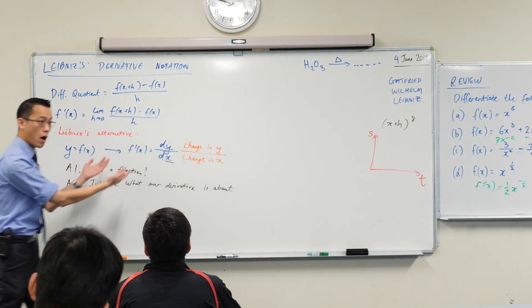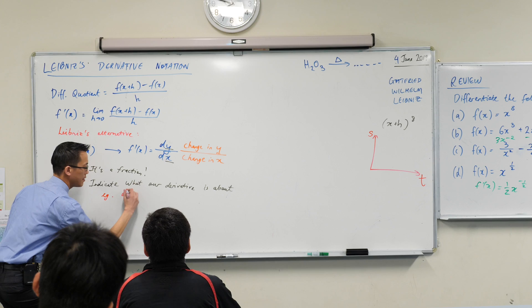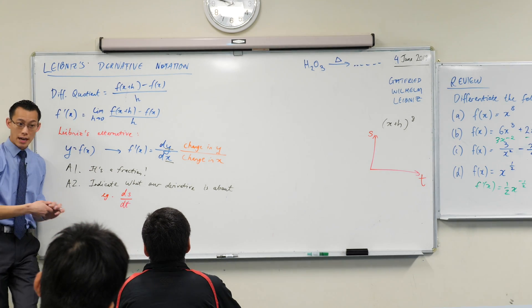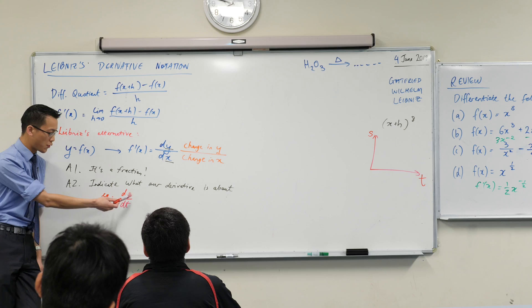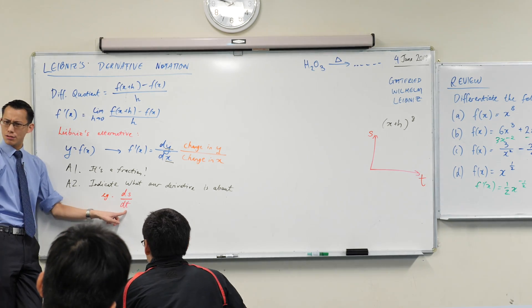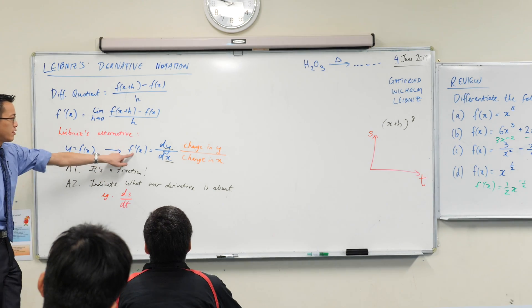So instead of writing dy on dx, I would write, for example, ds on dt. Now, we're going to start to encounter places where you've got different things being differentiated and you're paying attention to different variables. This becomes really, really important.